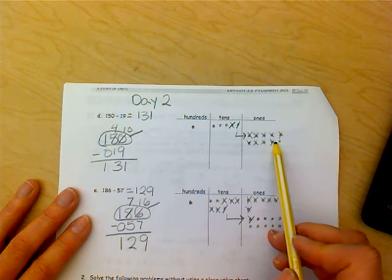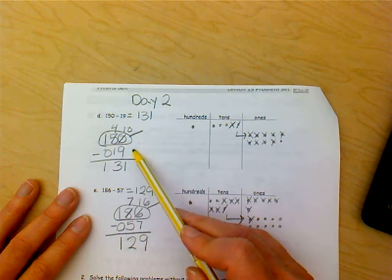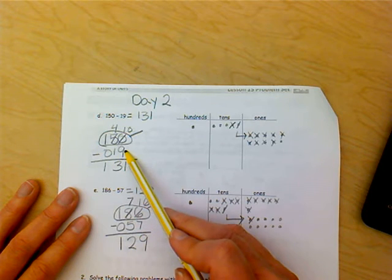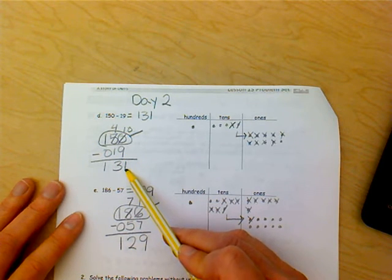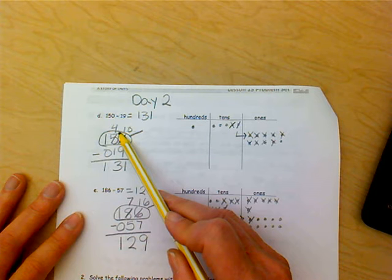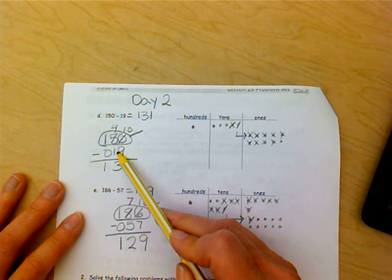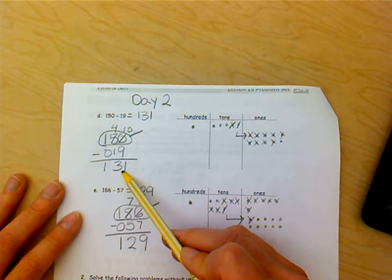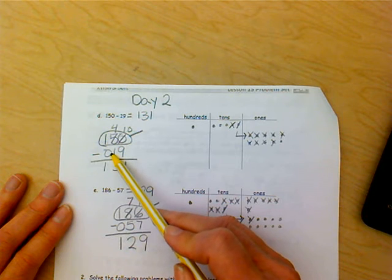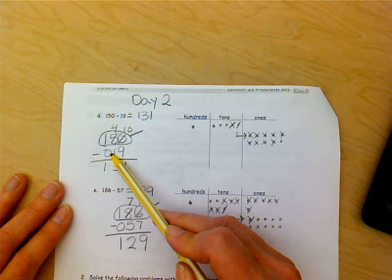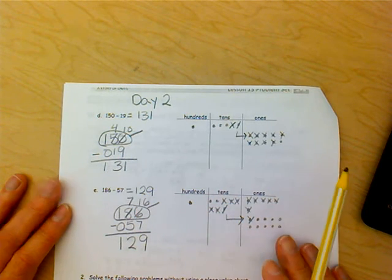And when you added that 10 to your ones, you ended up with 10 ones. 10 ones take away nine ones was one one. And then you had four tens that were left, and you're going to take one 10 away. That gives you three tens. And one 100 take away zero 100s left you with 100.